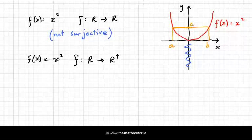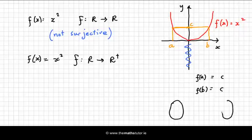So we could say that, for example, f of a is c, but f of b is also c. So that means we have a point... we have two points, in fact, in our domain which are mapped to the same point in our co-domain, which means that it's not injective.